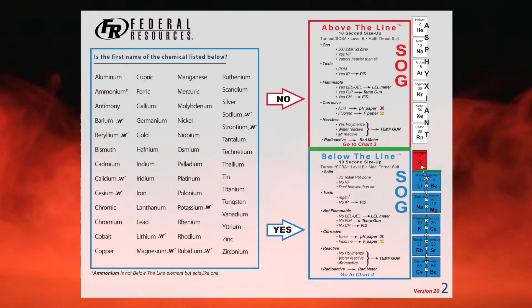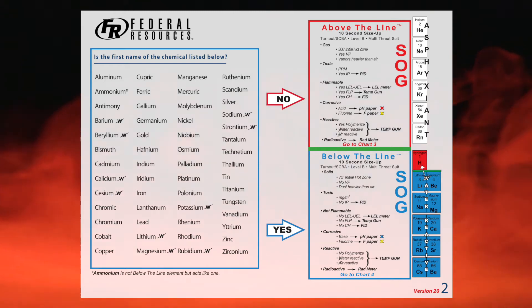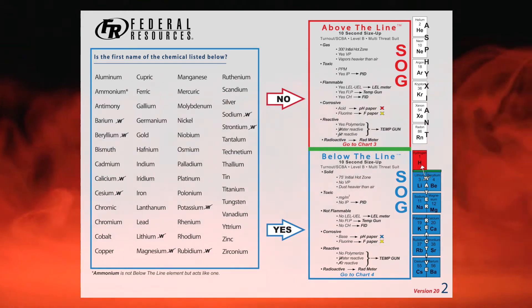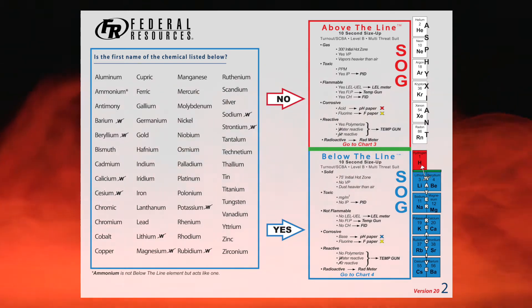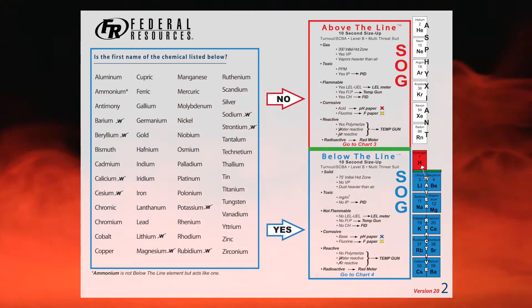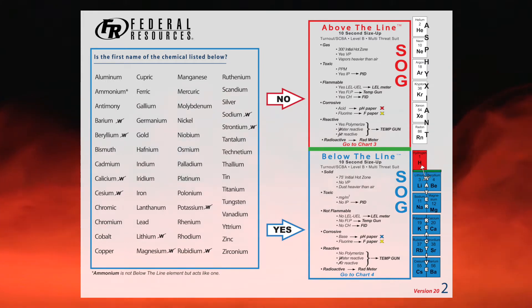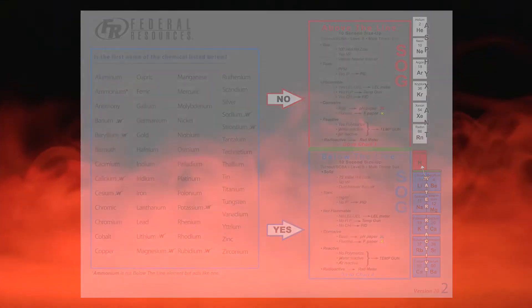Now let's use the system. Step one is size-up: above the line or below the line? Look at chart number two and look for acetaldehyde on the chart. Go to the A's — I see aluminum, but no acetaldehyde. So it's an above-the-line size-up. Above the line gives us all the hazards, like 12 different possible hazards. If we're lucky enough to go to chart number three and put it in a family, we can chop those 12 hazards down to sometimes two or three.